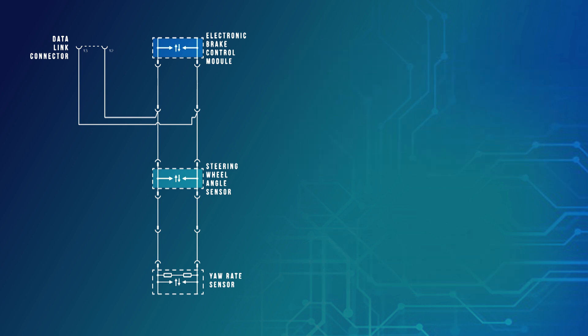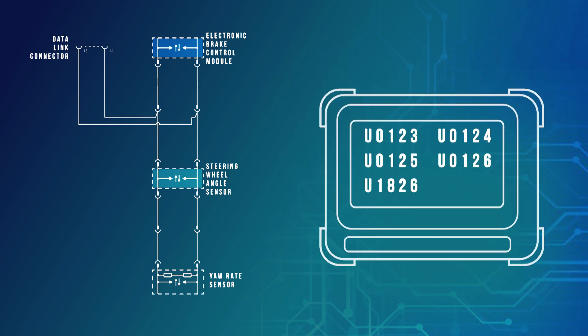A URAID or multi-axis accelerator sensor U-type code will set when there is either an ignition supply or ground circuit fault, or communication via the network can't be established with the device.